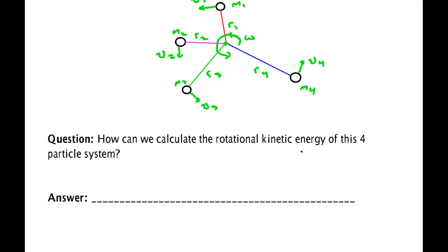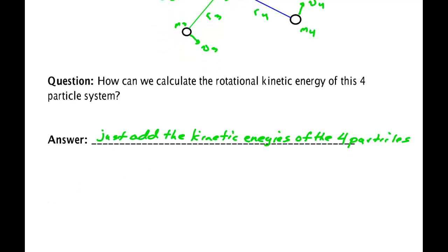Use one half mv squared for each one of these and solve it. So that's the answer to the question and that is what's going to lead us to this concept of moment of inertia. So the answer is: How can you find the rotational kinetic energy? Just add the kinetic energy of the four particles. So that's what I'm going to do. And I'm going to do it just for four and then we'll generalize it later on. So the rotational kinetic energy because this thing is just rotating has to equal kinetic energy of particle one, kinetic energy of particle two, kinetic energy of particle three, and kinetic energy of particle four.